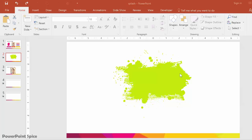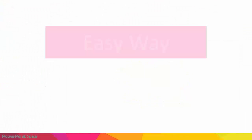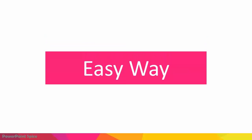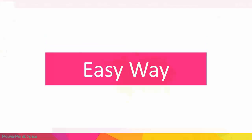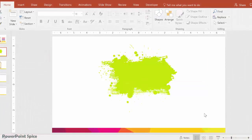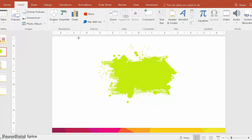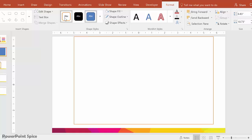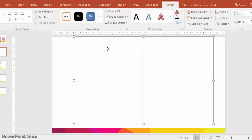Our challenge now becomes how do we get that woman's face into the splash background. There are two ways to do it — one is what I call an easy way and one is a little bit harder but much cleaner as well. So let's try the easy way first. The first thing we do is insert a rectangle onto the slide, so we go to Insert > Shapes and then rectangle.